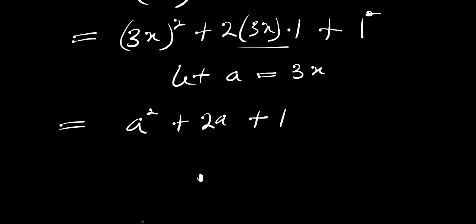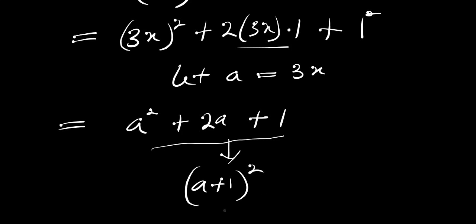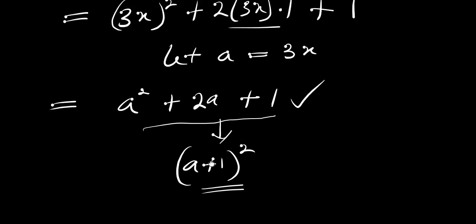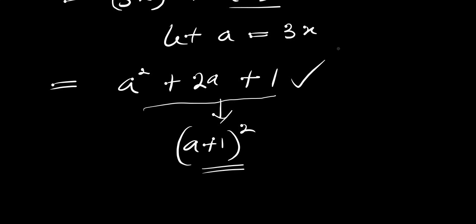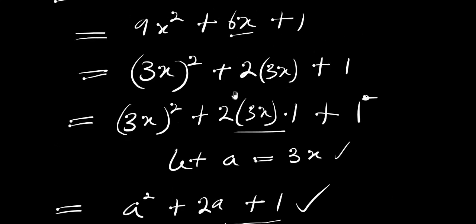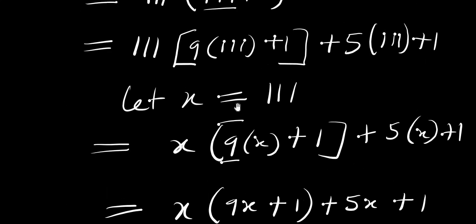This expression is in the form of (a plus 1) squared. Substituting back a equals 3x, we get (3x plus 1) squared. Therefore, 111556 equals (3x plus 1) squared.